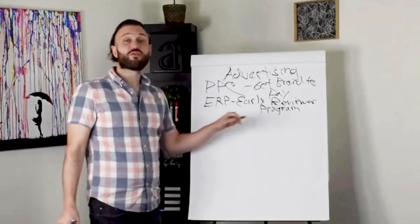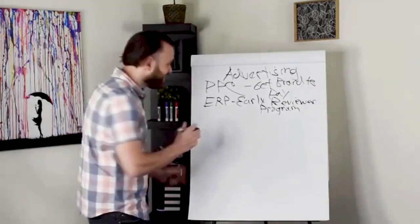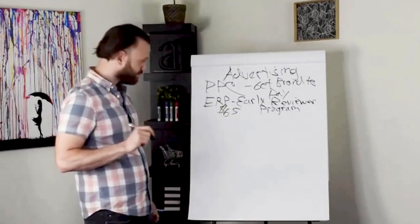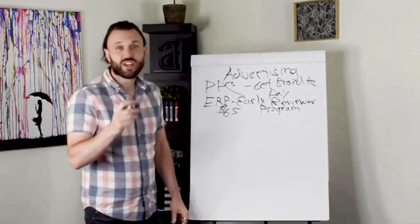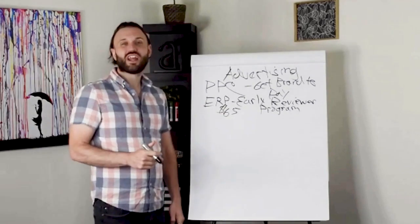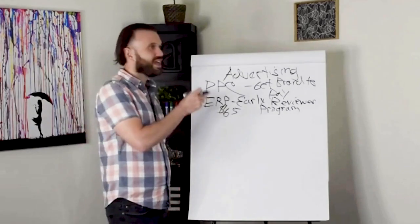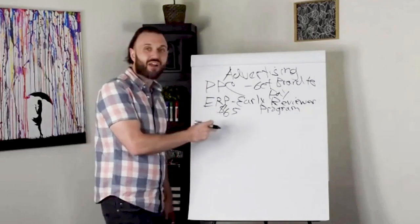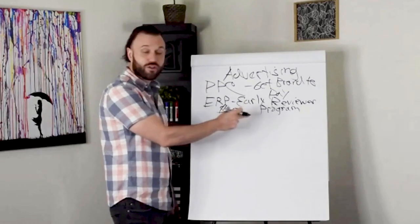So what the early reviewer program does, it's a $65 fee per ASIN. And if you're using it for an ASIN with variations, you would put the parent variation, not the children variation, in the early reviewer program, and all of the SKUs in it would be populating for that early reviewer program.